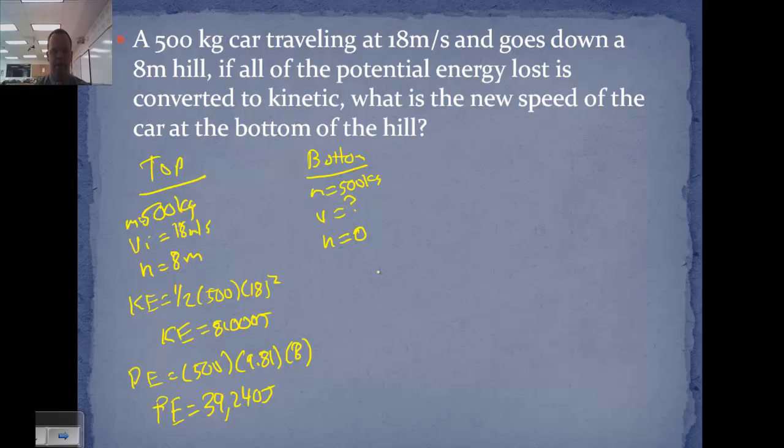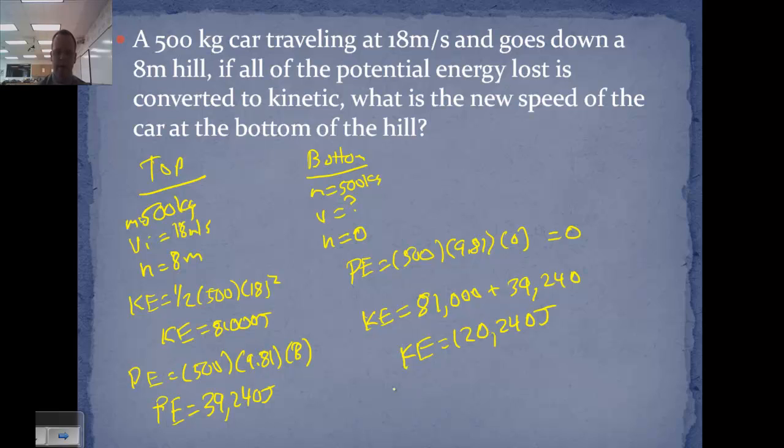Now, the problem has told us that all of this potential energy becomes kinetic. Since the potential energy here is 500 times 9.81 times zero, means we've lost 39,240 joules. So the kinetic energy is now 81,000 plus 39,240, which comes out to 120,240 joules. Now we want to solve for velocity. Equals half 500 v squared.